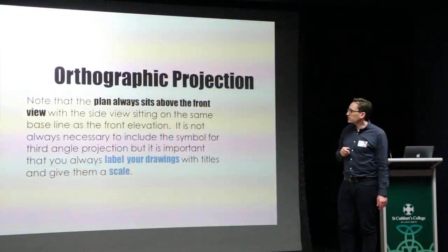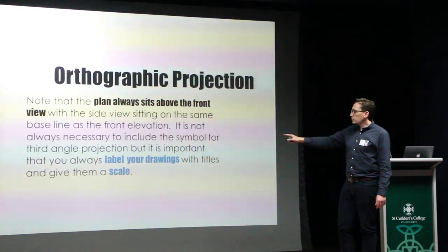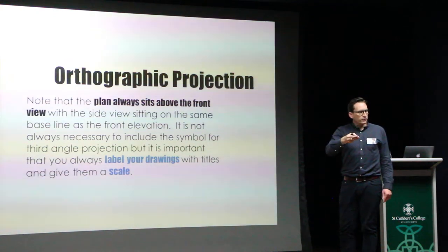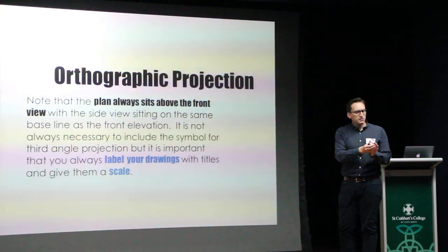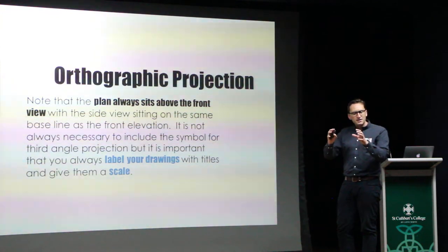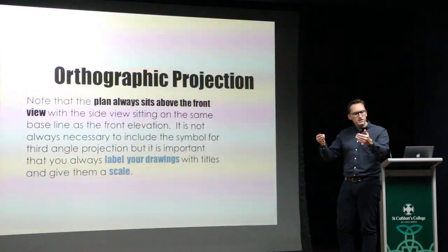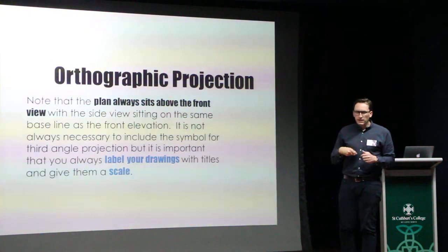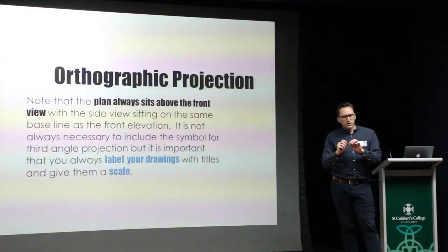Another important thing is always to label your drawings — a little label of what this is. Maybe it's the elevation to the north. As a designer, I might be expecting to see particular articulation of that facade, quite different from what I see on the south, and probably a little bit different from what I see on the east and the west of your building. But if you label them, then I don't need to do any thinking — I can figure it out very quickly to understand what you're showing me.